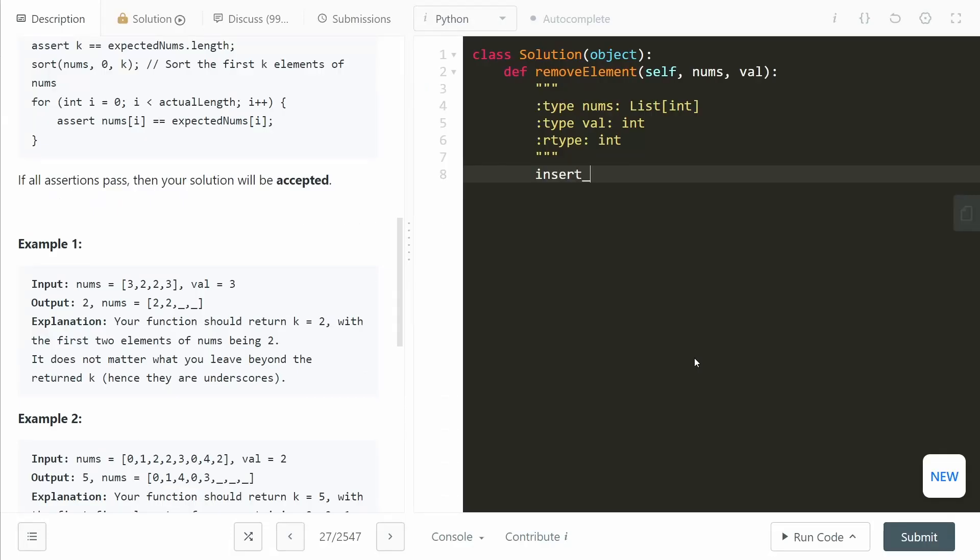Okay, so let's define insert index first of all, and that starts out at zero. Then we loop through the entire array from zero to the length of nums. Now we check if nums at i, which is our current element, if that does not equal the value, then we do our logic.